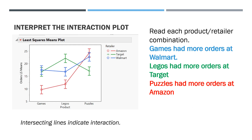Finally, if there is interaction, you go straight to the interaction plot and read each category across the chart. When I look for the highest number of orders in the games category, I see the blue line which goes with Walmart. When I look at the Legos category, its highest point is the green line which represents Target. And puzzles' highest point occurs with Amazon sales. So games sold the best at Walmart, Legos sold more at Target, and puzzles sold the most at Amazon.